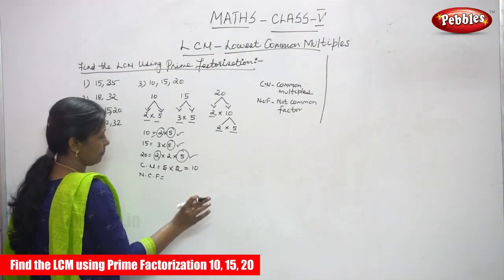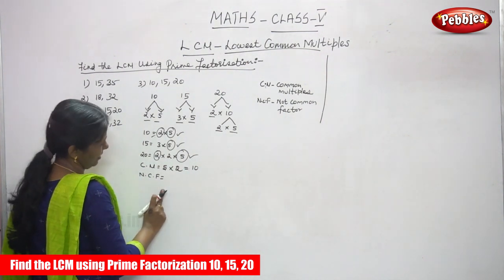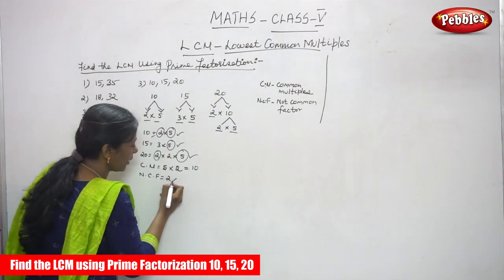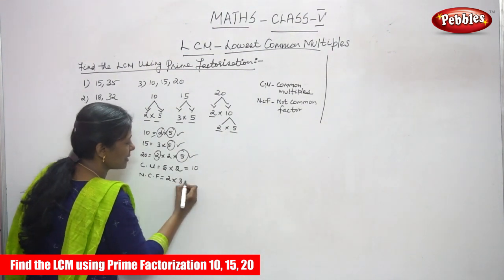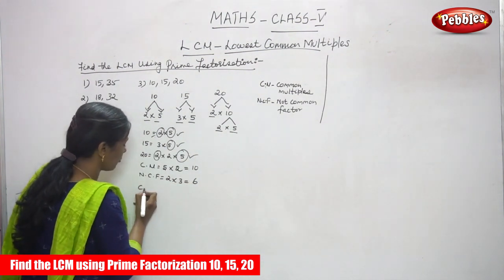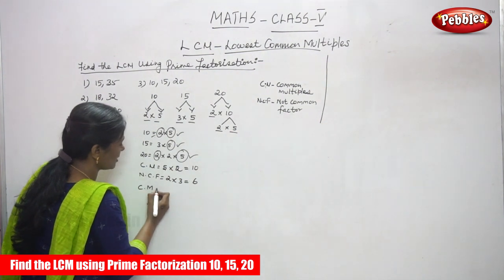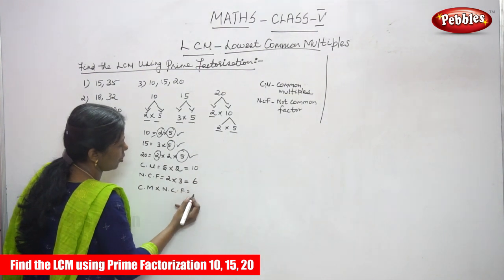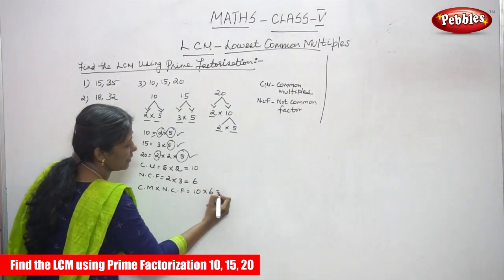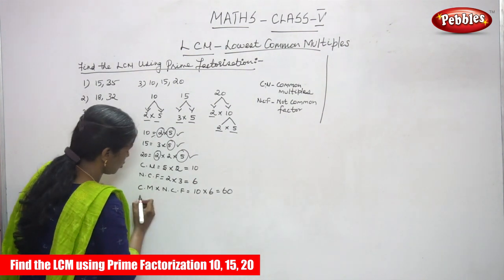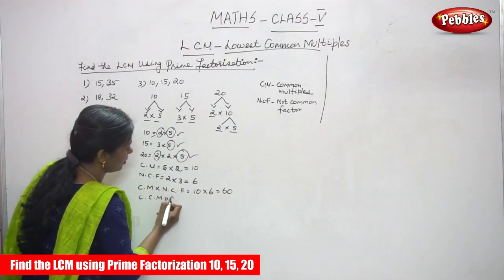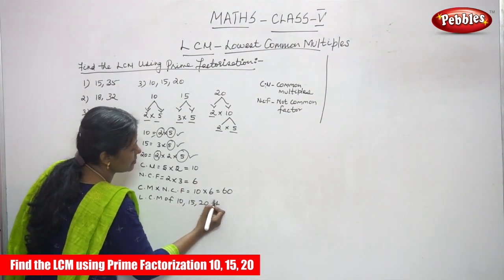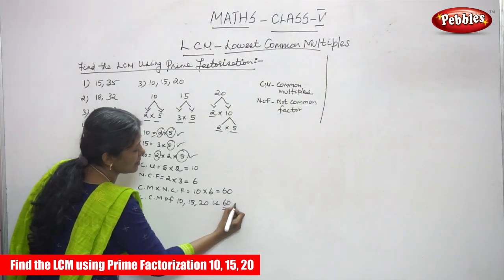After that, the not-common factors — the remaining ones are 3 and 2, that is 2 into 3, which equals 6. After that, you multiply the common multiples by the not-common factors: that is 10 into 6, which gives 60. So the LCM of 10, 15, and 20 is 60.